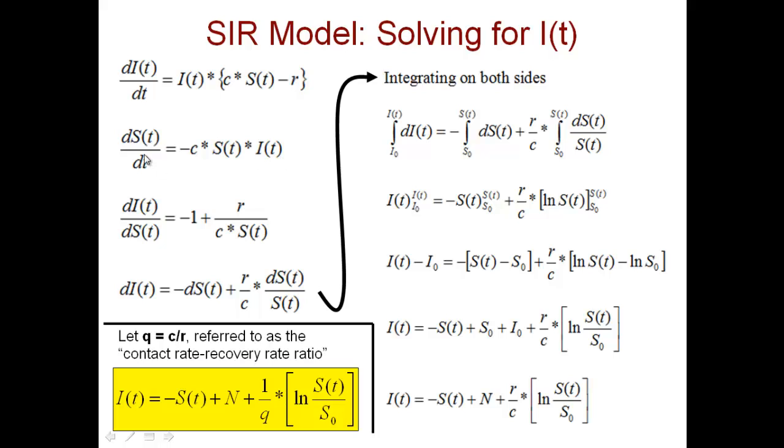So now what we can do is divide the first equation by the second equation. The dt will cancel away, so we can have dI(t) divided by dS(t). Now the I(t) will also cancel away. So this c times S(t) will cancel this c times S(t).